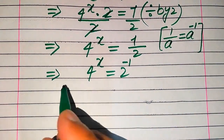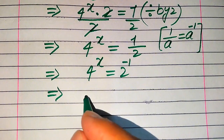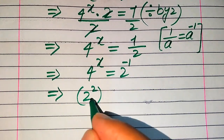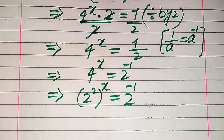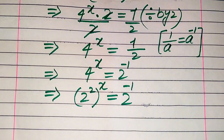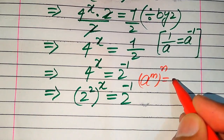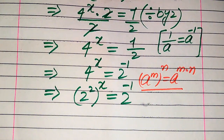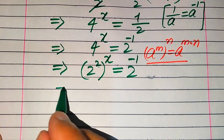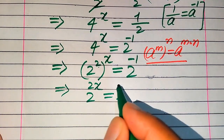Now we focus on the left hand side. You see the base of this term is 4, and we write 4 in prime factor form: the prime factors of 4 are 2 squared, and its whole power x equals 2 inverse. We need to use the exponent law: if we have a to the power of m to the power of n, it equals a to the power of m multiplied by n. Applying this rule to the left hand side and multiplying the two exponents, it becomes 2 to the power of 2x equals 2 inverse.